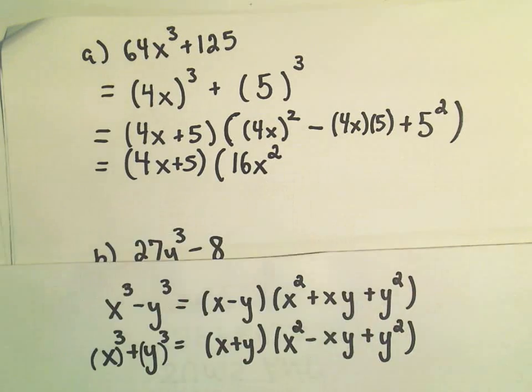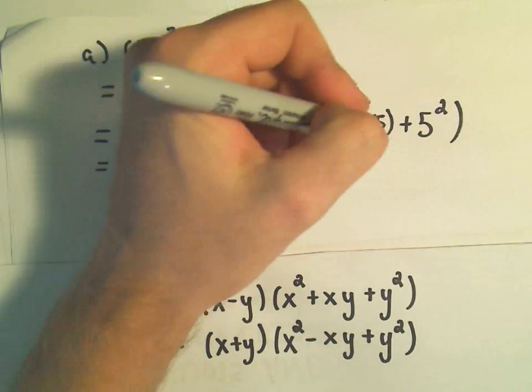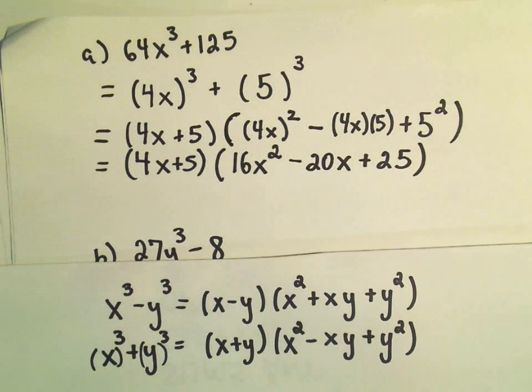I can multiply the negative 4 and the 5 and make that negative 20x. And then our positive 5 squared will just get positive 25.